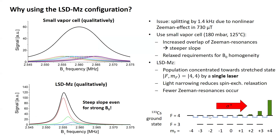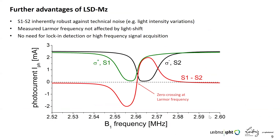In the end, we obtain a magnetometer signal — the black line — with very large amplitude, which is quite narrow and has a very steep slope, even in the case of strong background fields. The differential signal is inherently robust against technical noise such as laser intensity variations. The Larmor frequency is not affected by light shifts because both sub-curves are always shifted symmetrically. There is no need for lock-in detection or high-frequency signal acquisition — we just need to cover the magnetometer bandwidth of around a few kilohertz.